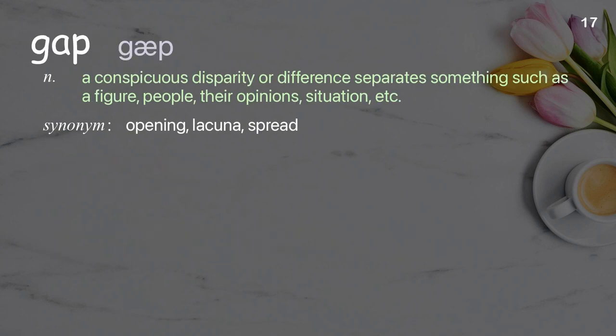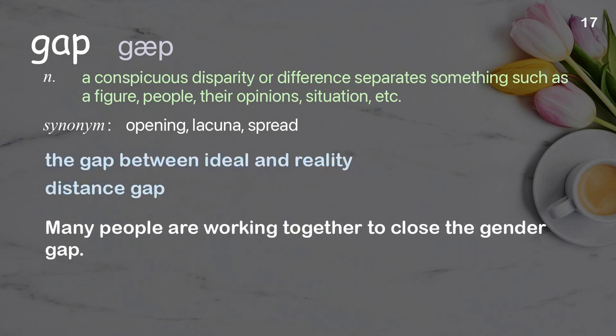Gap: a conspicuous disparity or difference that separates something such as figures, people, their opinions, or situations. Examples: the gap between ideal and reality; distance gap. Many people are working together to close the gender gap.